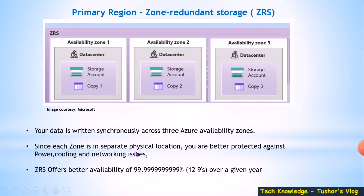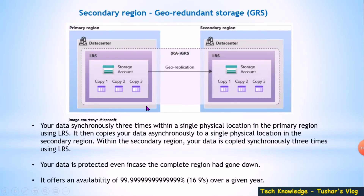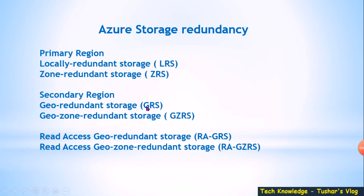Zone Redundant Storage (ZRS) offers somewhat better availability of 99.129% over a given year. Now moving to the next category: under secondary region, we have Geo Redundant Storage and Geo Zone Redundant Storage.